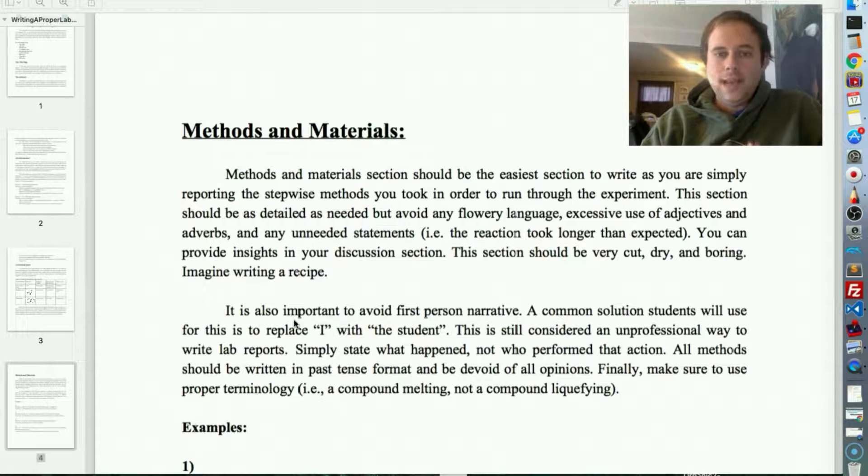And you can basically surmize it in your own words. Some professors will let you just reference the lab book. This section should be as detailed as needed, but should avoid any flowery language, excessive use of adjectives and adverbs, and any unneeded statements. For instance, saying the reaction took longer than expected. You don't need to state that. All you need to state is how long the reaction actually took. You can provide insights in your discussion section. This section should be very cut, dry, and boring. Imagine you're writing a recipe.